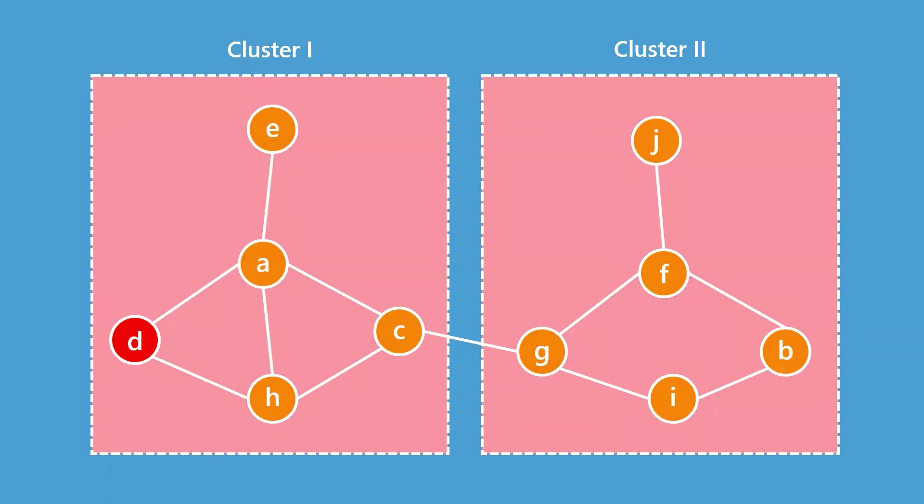If D in cluster one was infected and then F in cluster two somehow got infected, naturally you would wonder, how did this happen?